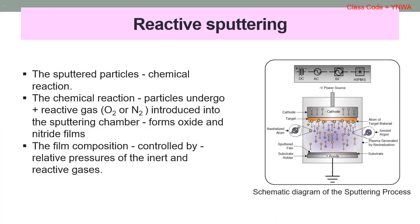In reactive sputtering, the sputtered particles undergo a chemical reaction before coating the substrate. The deposited film is therefore different from the target material. The chemical reaction that the particles undergo is with the reactive gas introduced into the sputtering chamber, such as oxygen or nitrogen. Usually, oxide and nitride films are often fabricated using reactive sputtering. The composition of the film can be controlled by varying the relative pressures of the inert and reactive gases. Film stoichiometry is an important parameter for optimizing functional properties like the stress in silicon nitride (SiNx) and the index of refraction of silicon oxide.